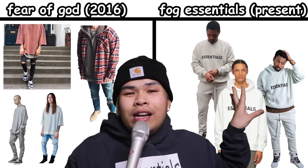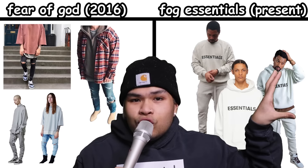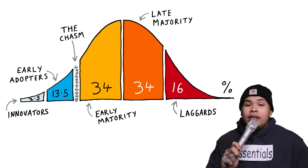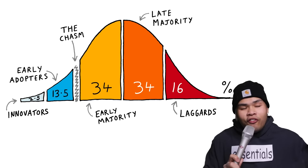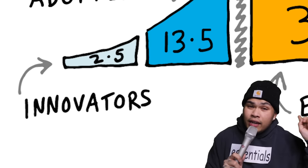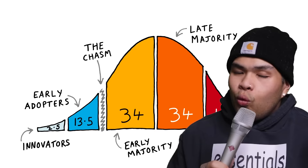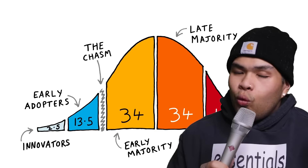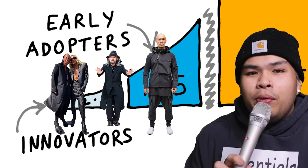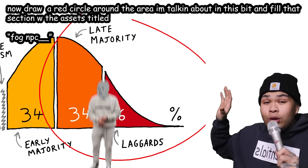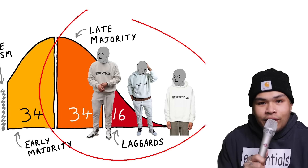My theory is that a fashion NPC is spawned when something that was otherwise exclusive becomes readily available to the masses, and people are still left with the mentality of 'I have something that you want but you can't have.' In business and tech there's a theory called the diffusion of innovations with five major groups: the innovators, early adopters, early majority, late majority, and laggards. The NPCs fall in the back 50 — the late adopters and laggards.